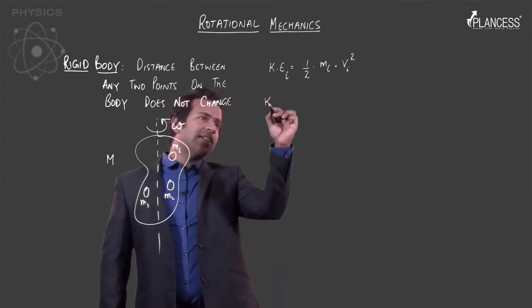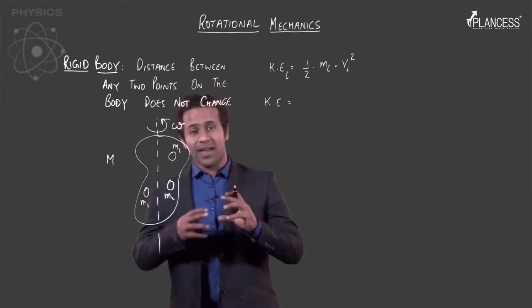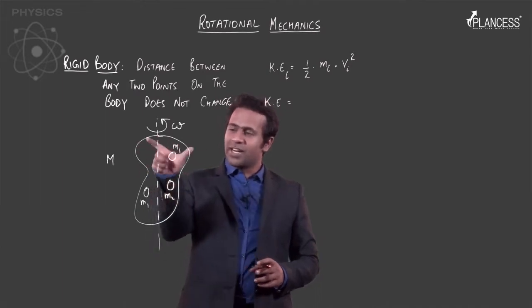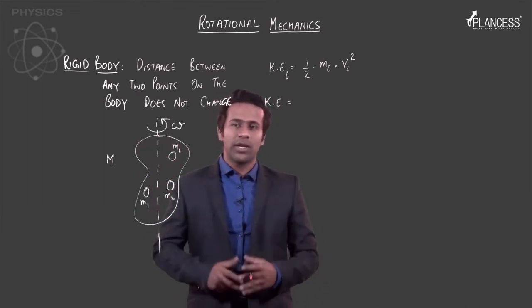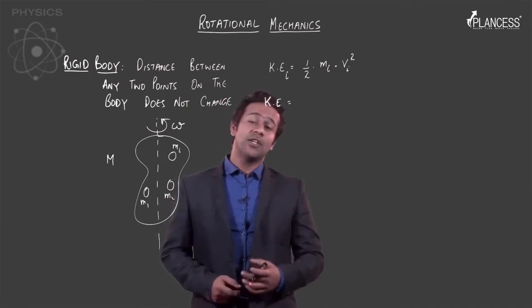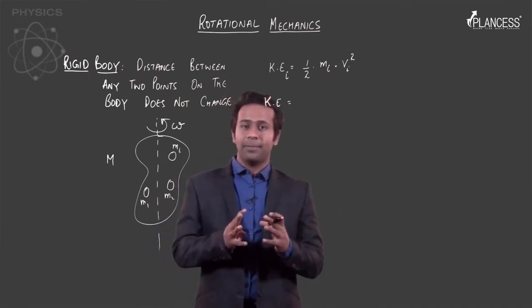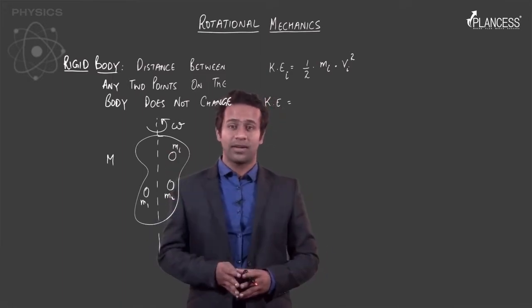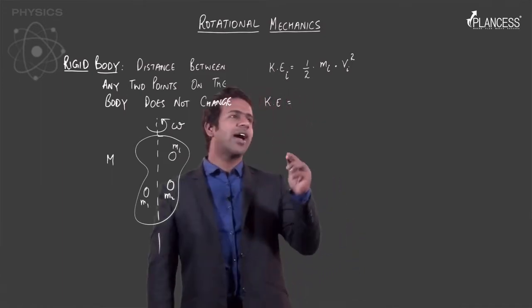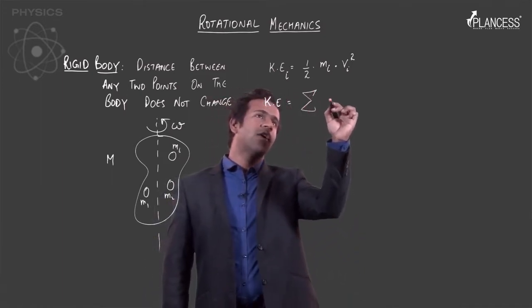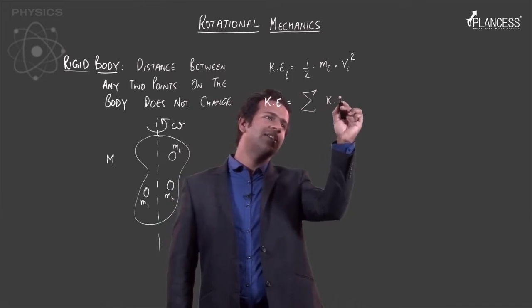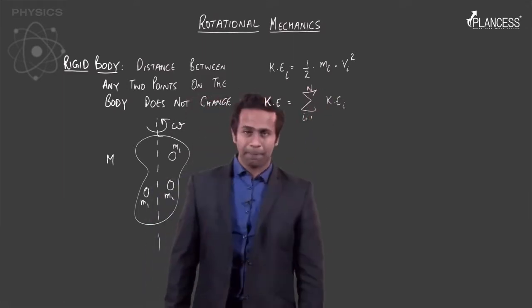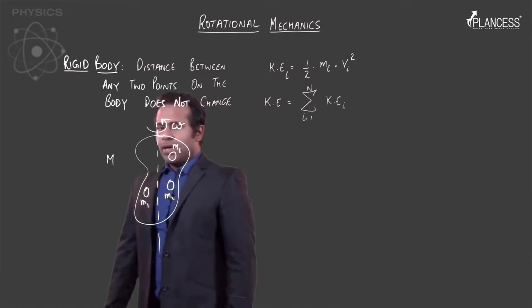So the total kinetic energy logically would be the sum of kinetic energy of all these bodies. If this single rigid body is made up of 10 smaller bodies, then if you find kinetic energy of all of these 10 bodies and add them up, then you get the total kinetic energy. So the total kinetic energy would be the summation of all these kinetic energies where this index i varies from 1 to n.